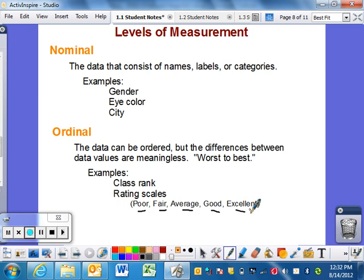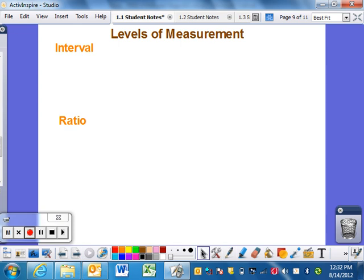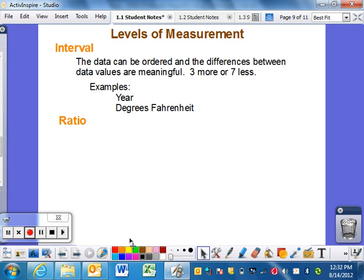Interval: data can be ordered and the differences between data are meaningful. We're one step above ordinal - we can order them and math is meaningful. For instance, three more or seven less of something. A year makes sense because 2004 was eight years ago. Degrees Fahrenheit fall into interval. When it's 69 degrees outside, that's nine more degrees than 60 degrees - there is a difference.